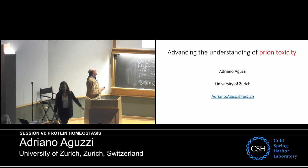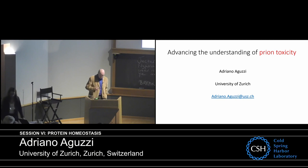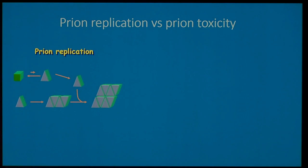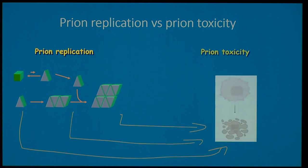I'm interested in prion toxicity, and I want to start with just — I think we can really separate two different phases. One is really prion replication, and that I have decided many years ago to stay away from. But then, it's not really obvious how the aggregation of prions really damages cells.